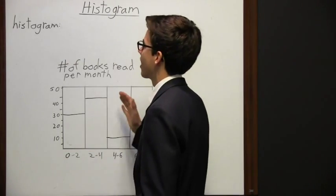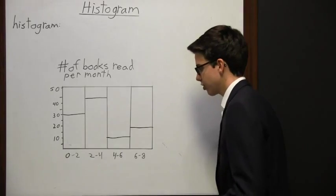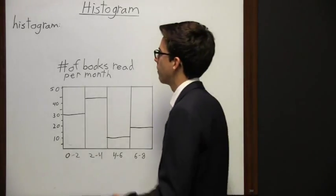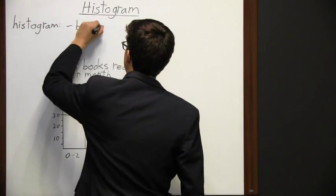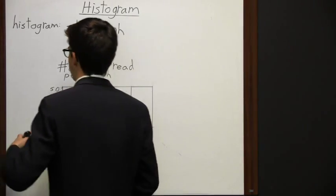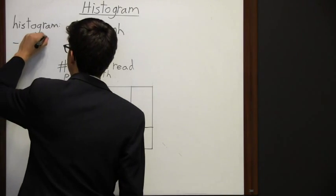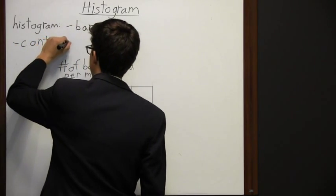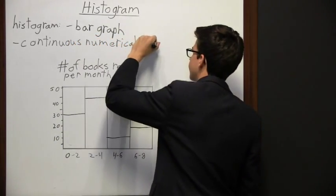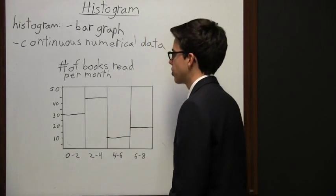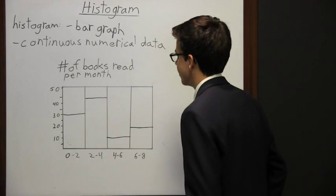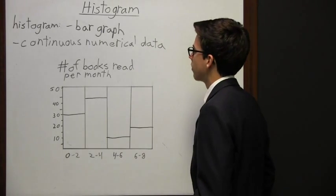What we have here is an example of a histogram. A histogram is very similar to a bar graph. In fact, we could say it's a type of bar graph. It displays continuous numerical data. It's a way to visually represent data that you're dealing with. Right here, we have a histogram.